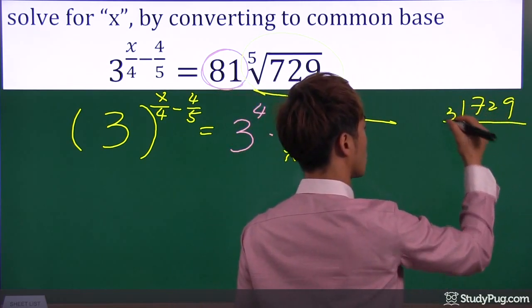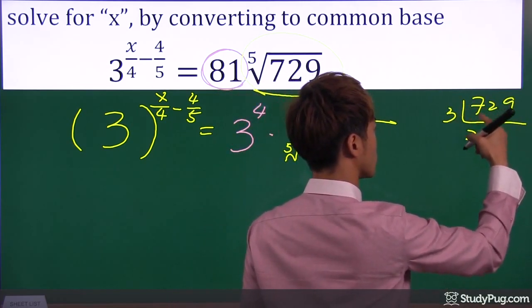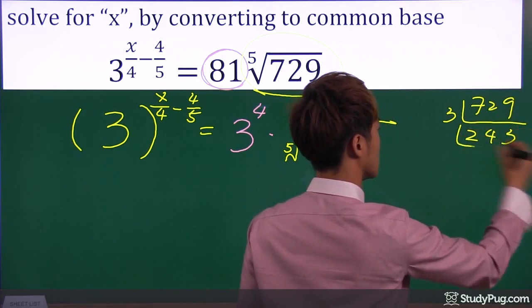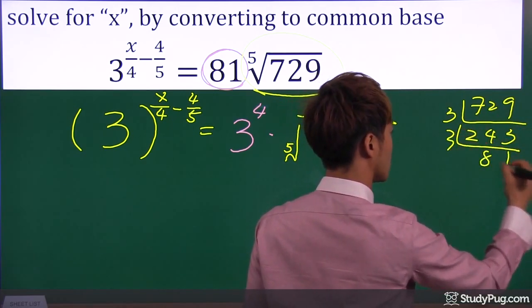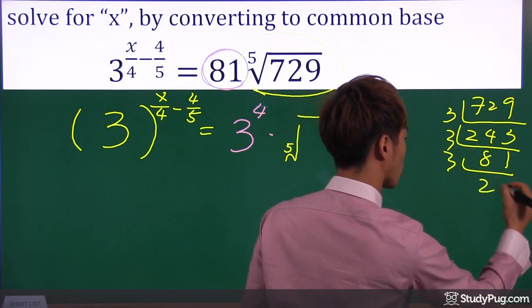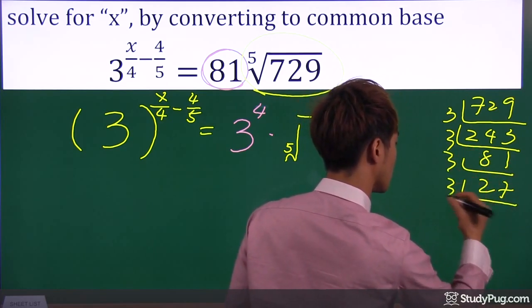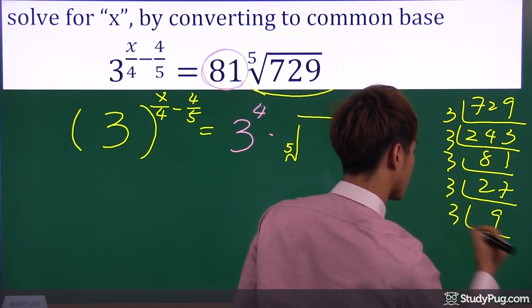So divided by three, we get two four three. Divided by three, 81. Divided by three, 27. Divided by three, nine. Divided by three, three. Oh, nice.